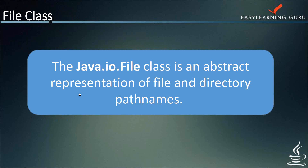Now let's talk about the File class. The java.io.File class is an abstract representation of file and directory path names. Instances may or may not denote an actual file system object such as a directory or a file. If it does denote such an object, it resides in a partition. A file system may implement restrictions on operations on the file system object such as reading, writing, or executing. Instances of the File class are immutable — once created, they never change.